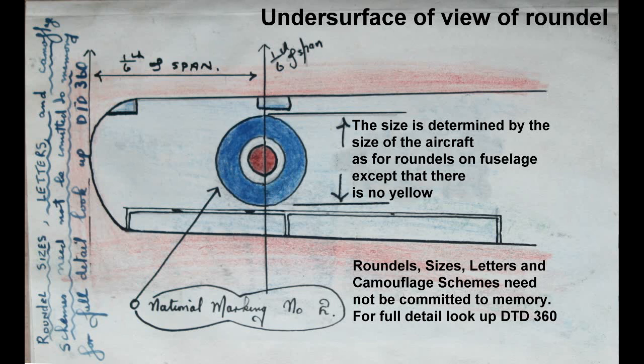Undersurface view of roundel: the size is determined by the size of the aircraft. As for roundels on fuselage, except that there is no yellow.